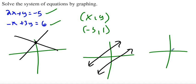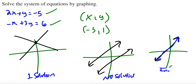You also have the case where if this is one of our lines, the other line can be the exact same one right on top of it. So this one would have one solution, this one would have no solutions, and this one would have infinite solutions.